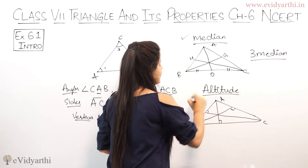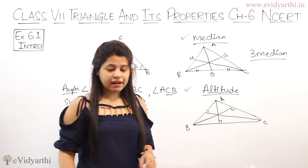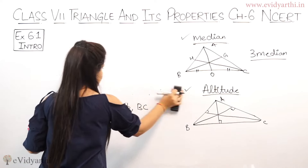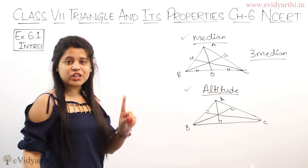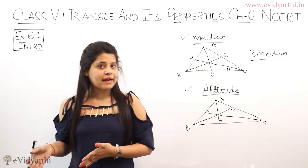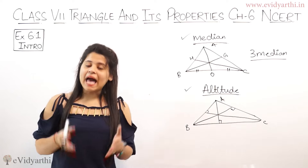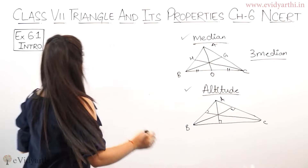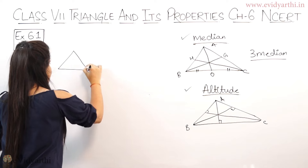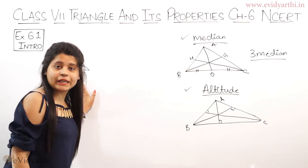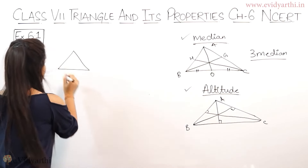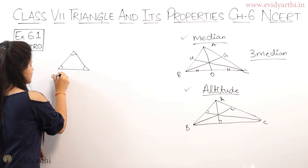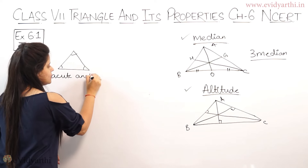So in this exercise we will use median and altitude. Now, triangles can also be classified by their angles. If I draw this triangle, this is an acute angled triangle — because all its angles are acute angles, meaning all are less than 90 degrees, for example 60, 60, and 60 degrees.